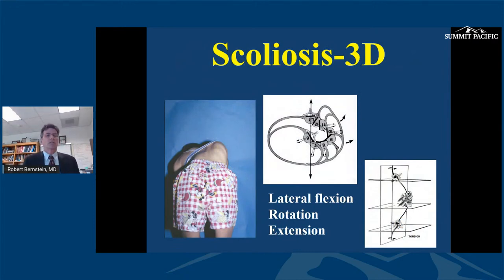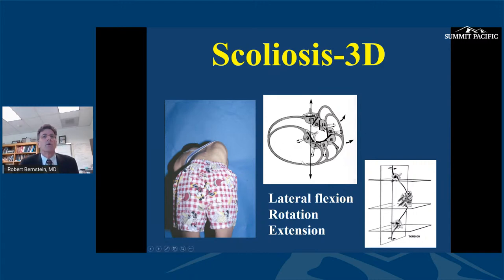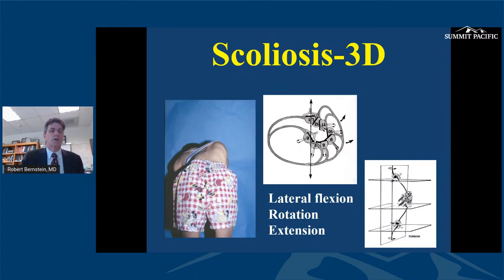Keep in mind that scoliosis is a three-dimensional abnormality — not just side-to-side curvature. The ribs themselves actually remodel, and both sides of the chest become abnormal: one side has a rib prominence while the other ribs are pushed down, and the cross-sectional shape of the chest changes. Most idiopathic scoliosis is lordoscoliosis, involving lateral flexion, rotation, and extension rather than kyphosis.